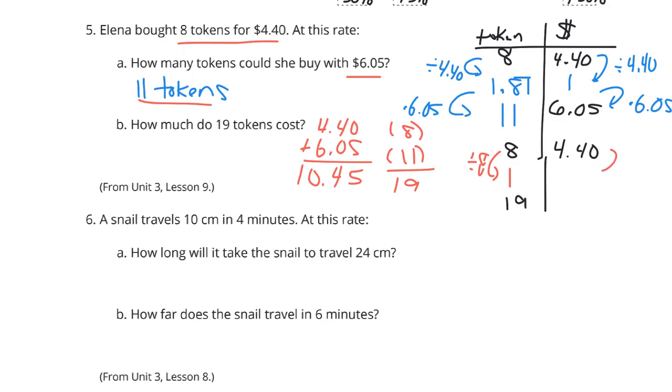And then if we take our $4.40 and divide by eight, we end up with $0.55 a token. If you multiply that $0.55 a token by 19, you can get $10.45. So if you didn't notice the eight tokens and 11 tokens can add up to 19 tokens, you could solve it that way as well.